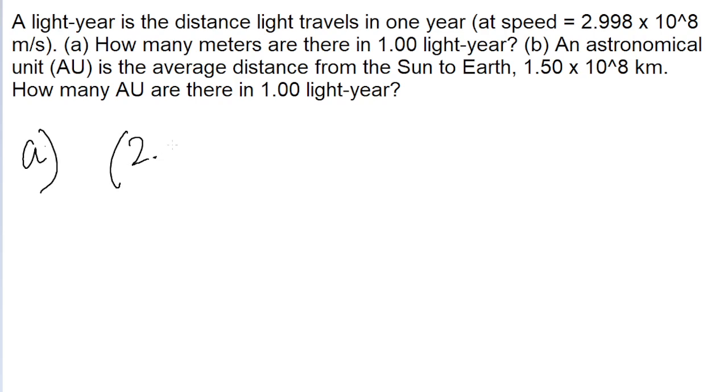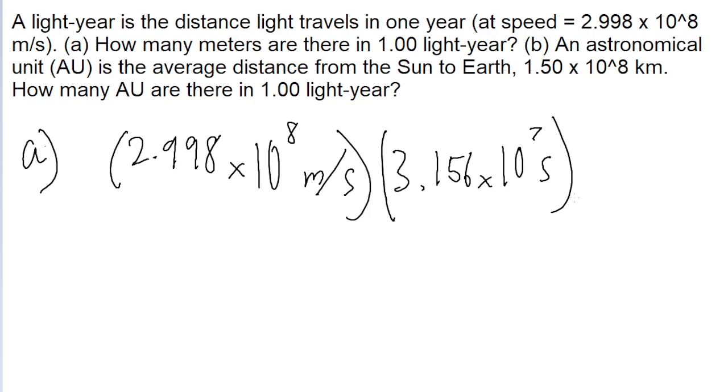which is given as 2.998 times 10 to the power of 8 meters per second, and multiply by the time in seconds that we're talking about, a year, and one year has 3.156 times 10 to the power of 7 seconds. That's something you can just look up. And so if you put this into a calculator, then you get a distance of about 9.462 times 10 to the power of 15 meters.